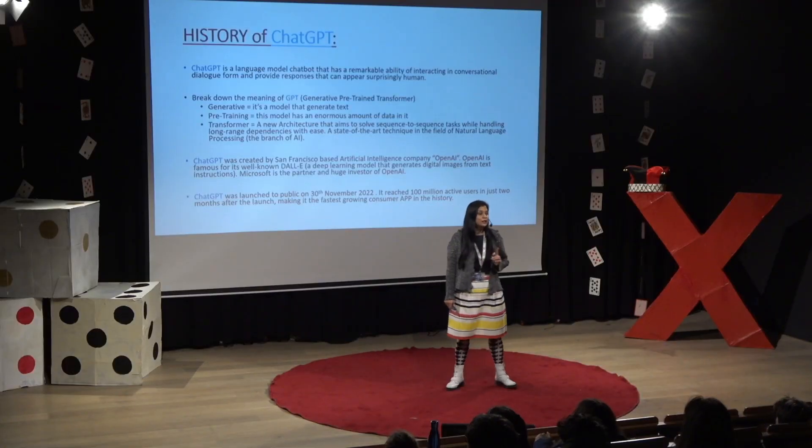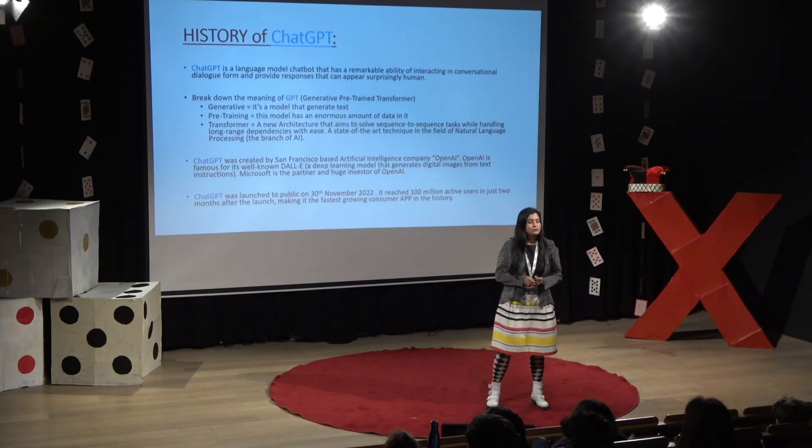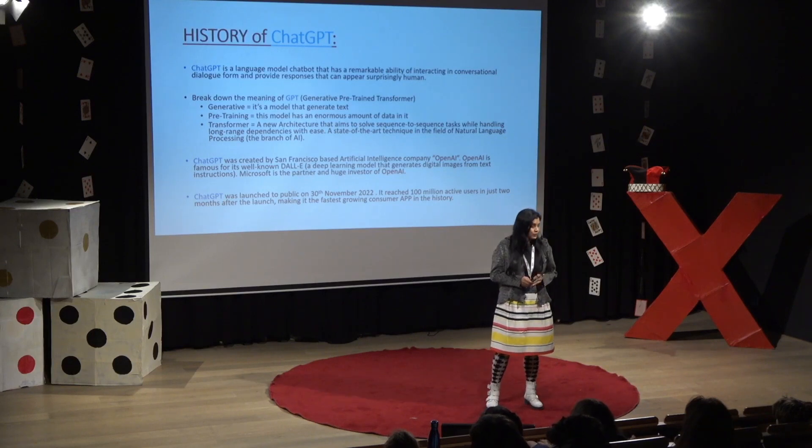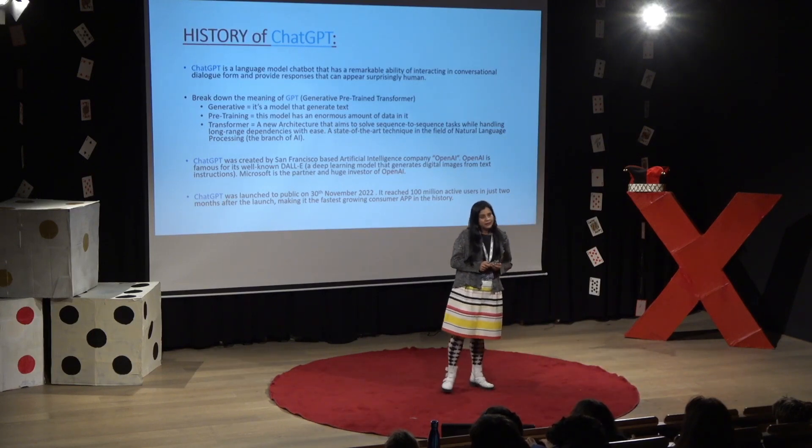What does GPT stand for? Generative Pre-Trained Transformer. Generative — it generates text. Pre-Trained — it has an enormous, huge amount of data already saved in it. And Transformer — it is a new architecture technique which solves sequence-to-sequence problems or tasks while handling different levels of complexity with ease.